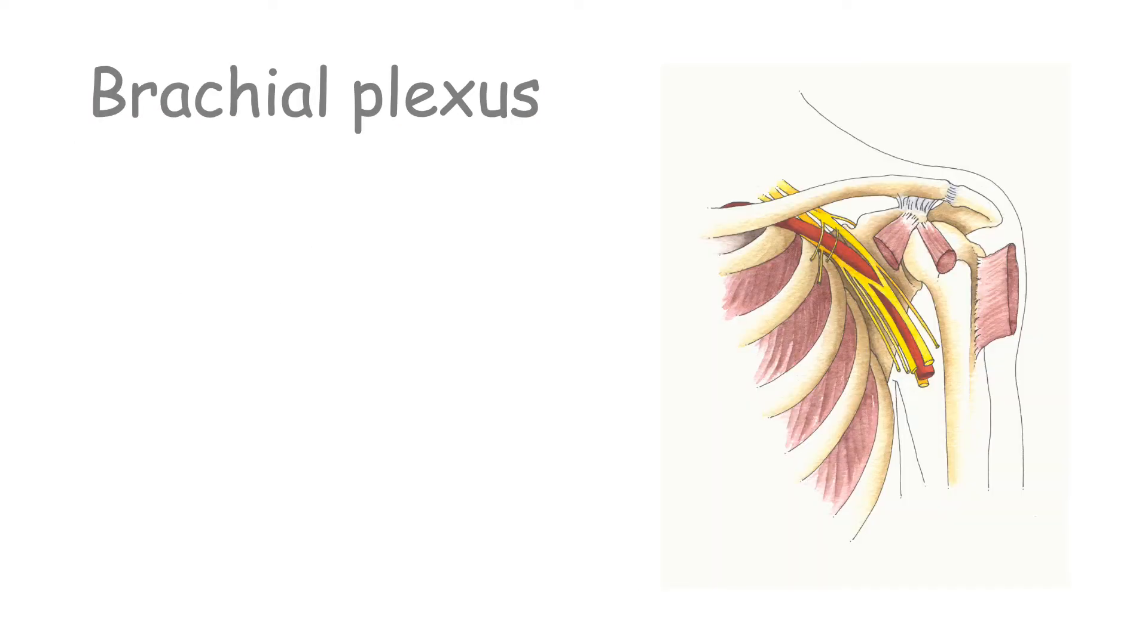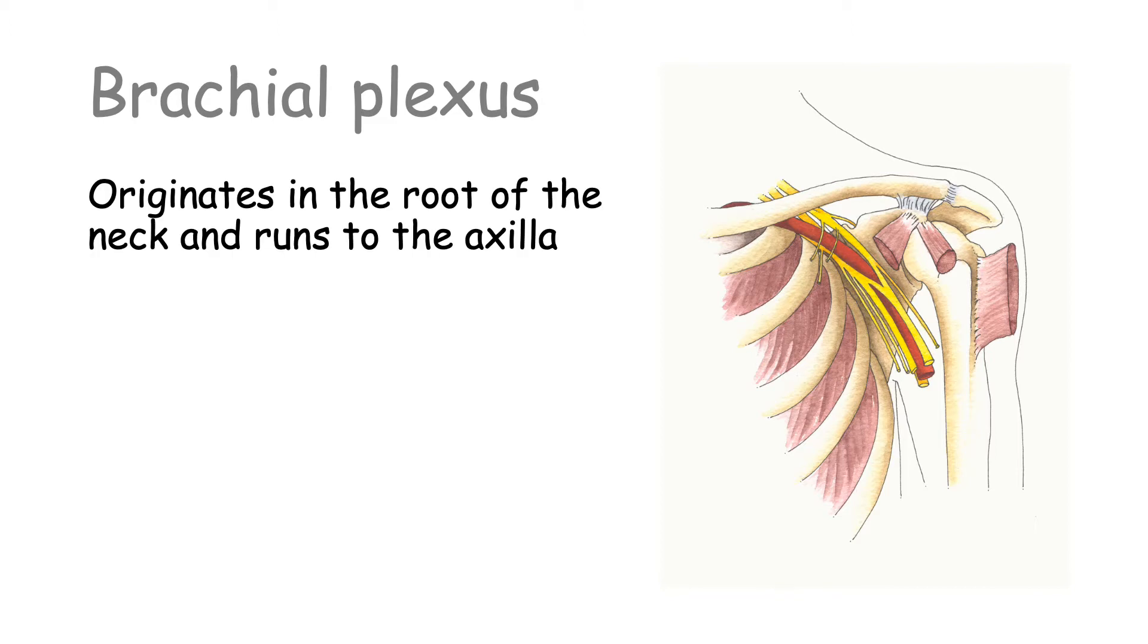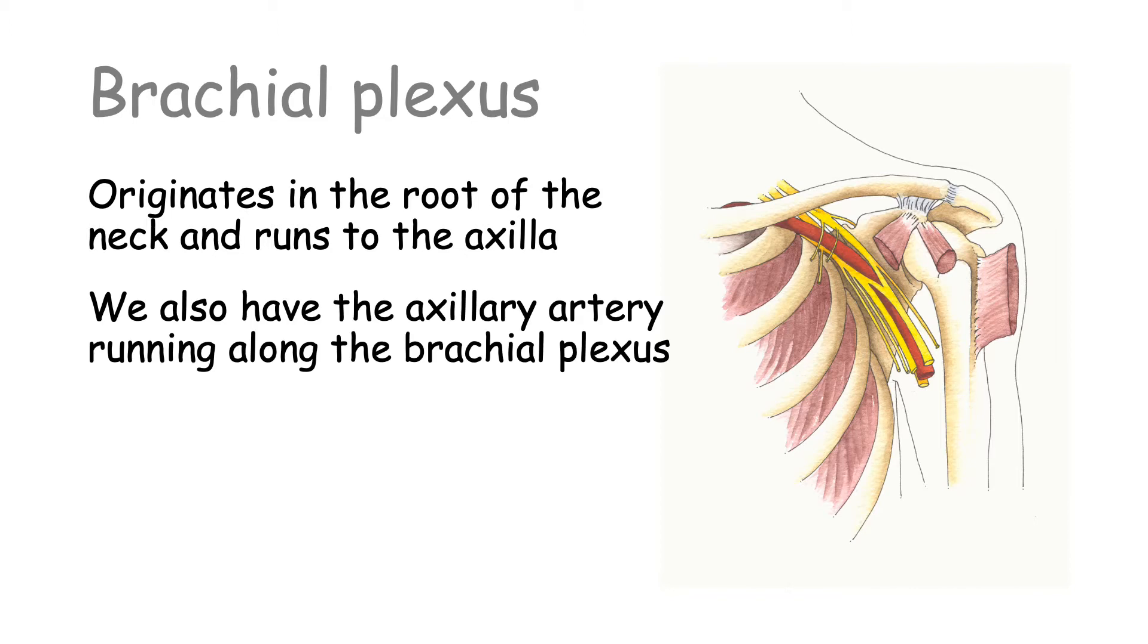If we get here an image of the brachial plexus we can see that it originates in the root of the neck and runs to the axilla, and we also have the axillary artery running along the brachial plexus. So this image is just so you have an idea of where the plexus is located in your body.